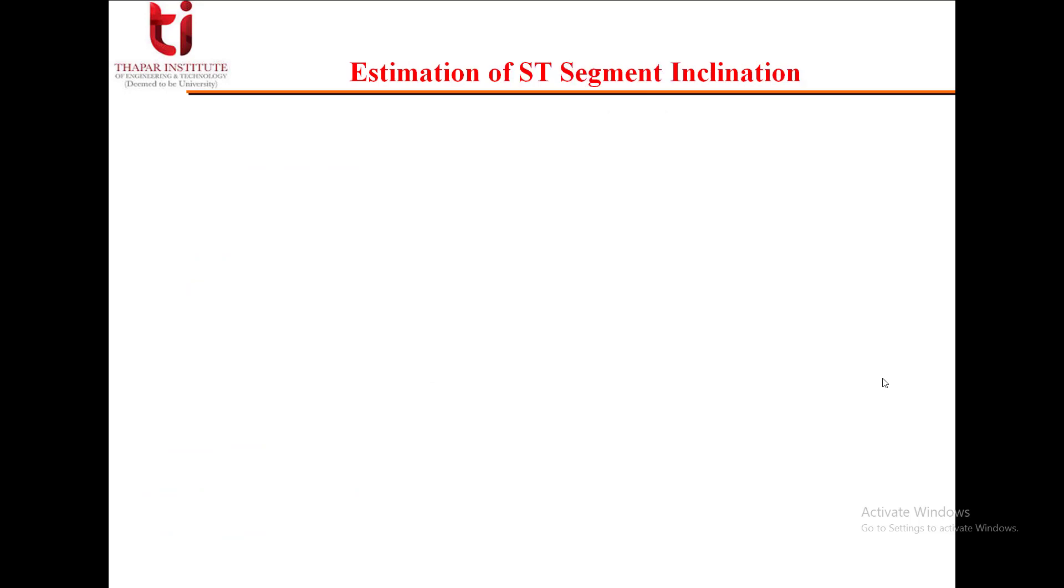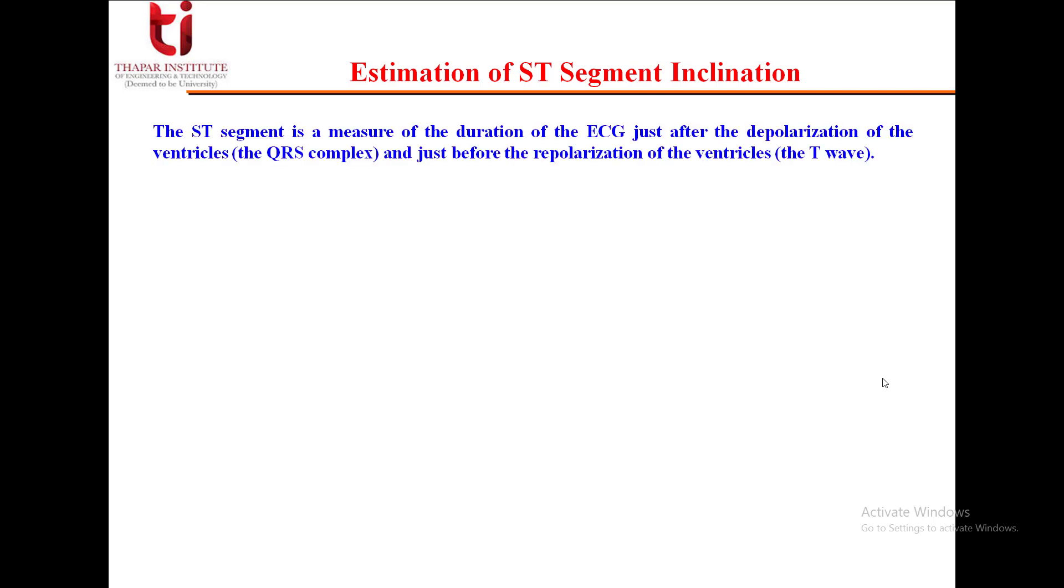Now we have another parameter, the ST segment. How can we estimate the ST segment inclination? The ST segment is a measure of the duration of ECG just after the depolarization of the ventricles and before repolarization, i.e., before the T wave. The changes in the ST segment of the ECG are indicative of a deficiency in the blood supply to the heart muscle.